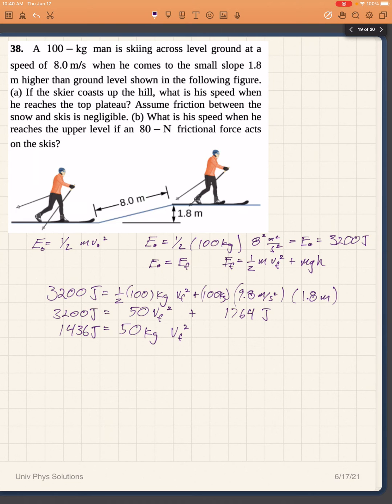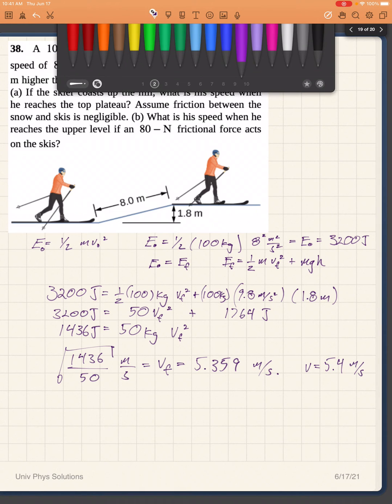So I just divide and take the square root. So my final velocity is going to be 1436 divided by 50, take the square root. That is equal to the square root of 28.72, which gives me 5.359 meters per second. So then I can say v equals 5.4 meters per second would be the final answer for part A.